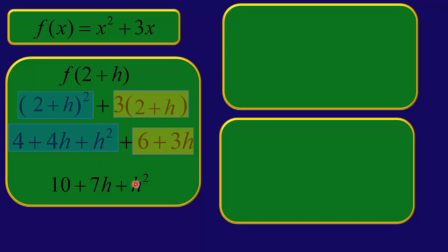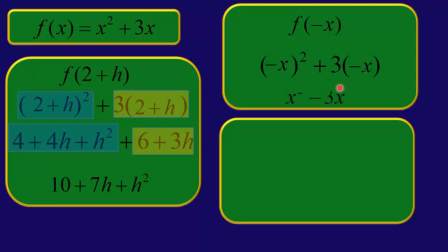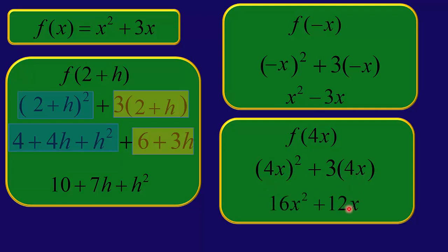The point is, you can evaluate this function at things besides just numbers. For example, if f of x equals x squared plus 3x, what does f of negative x equal? We leave a blank where x was and put in negative x. Negative x squared gives you a positive x squared, and positive 3 times negative x gives you negative 3x. So f of negative x equals x squared minus 3x. And then for f of 4x: put in 4x — 4x squared is 16x squared, plus 3 times 4x gives 12x. So f of 4x equals 16x squared plus 12x.